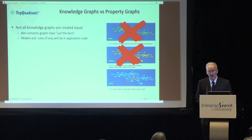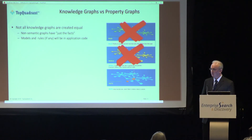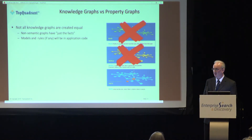Now with a regular graph — just a property graph that you get from a graph store vendor — you would get back in that search just the fact that James has blue eyes. You wouldn't get back that Andrew has blue eyes because we don't have the smarts for how to work with that data.